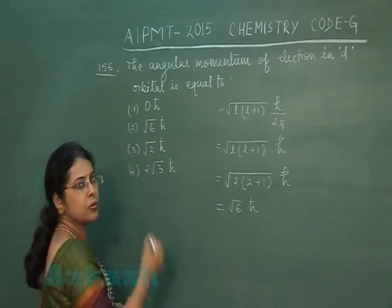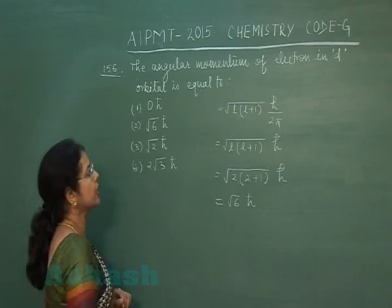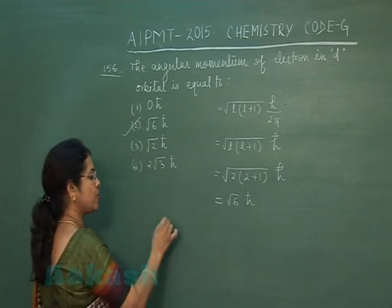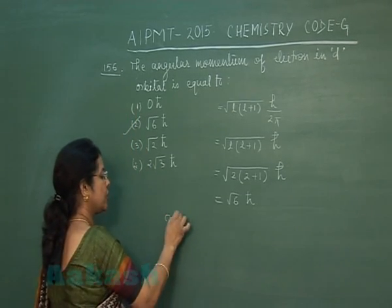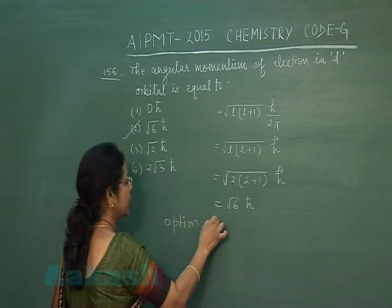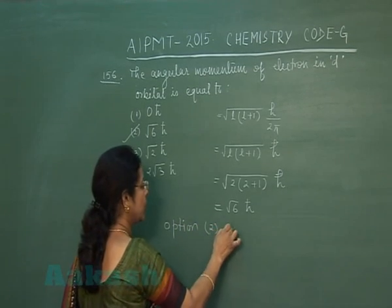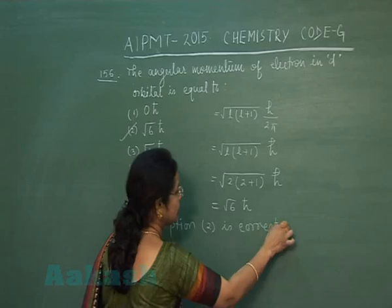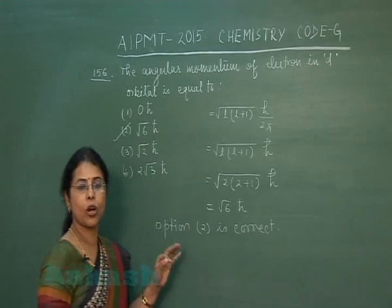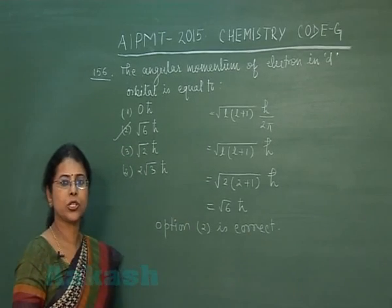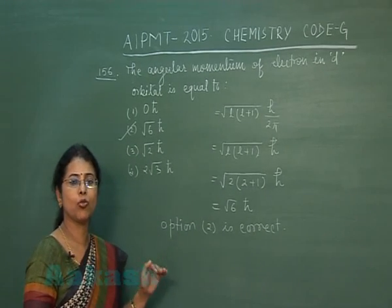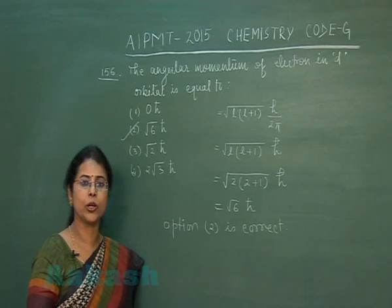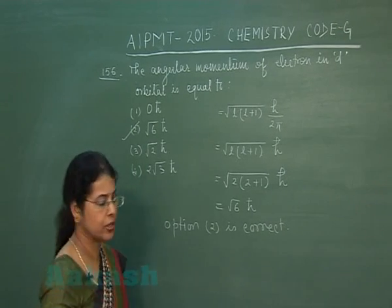Matching with the options, the second option is the correct option. This is a formula-based question where we simply apply the formula for angular momentum of an electron in an orbital.